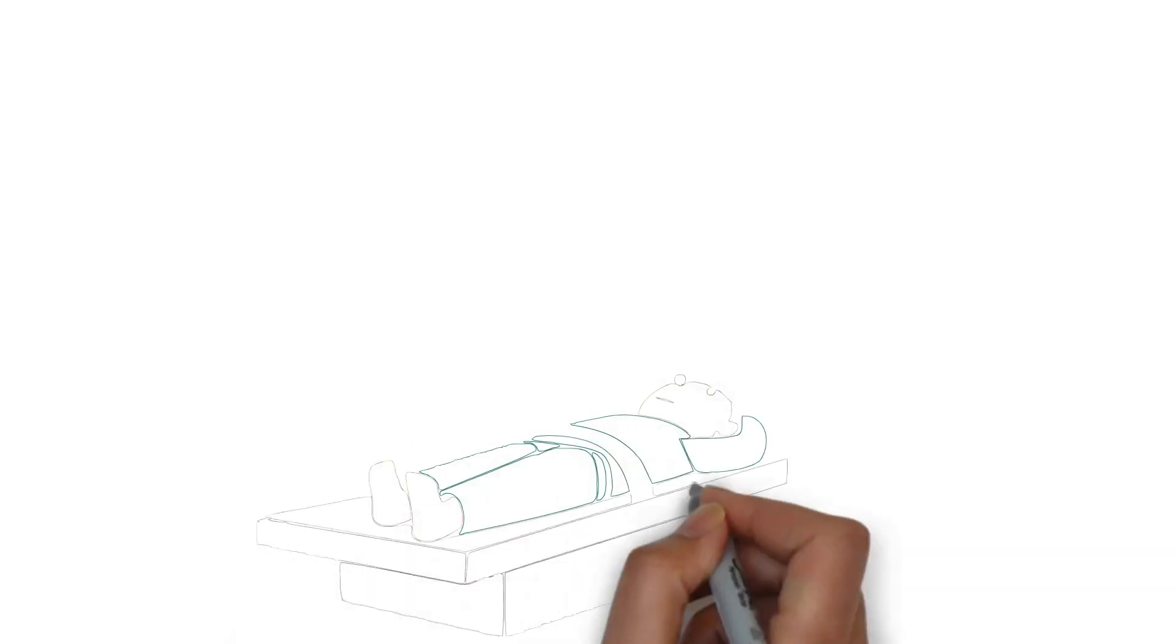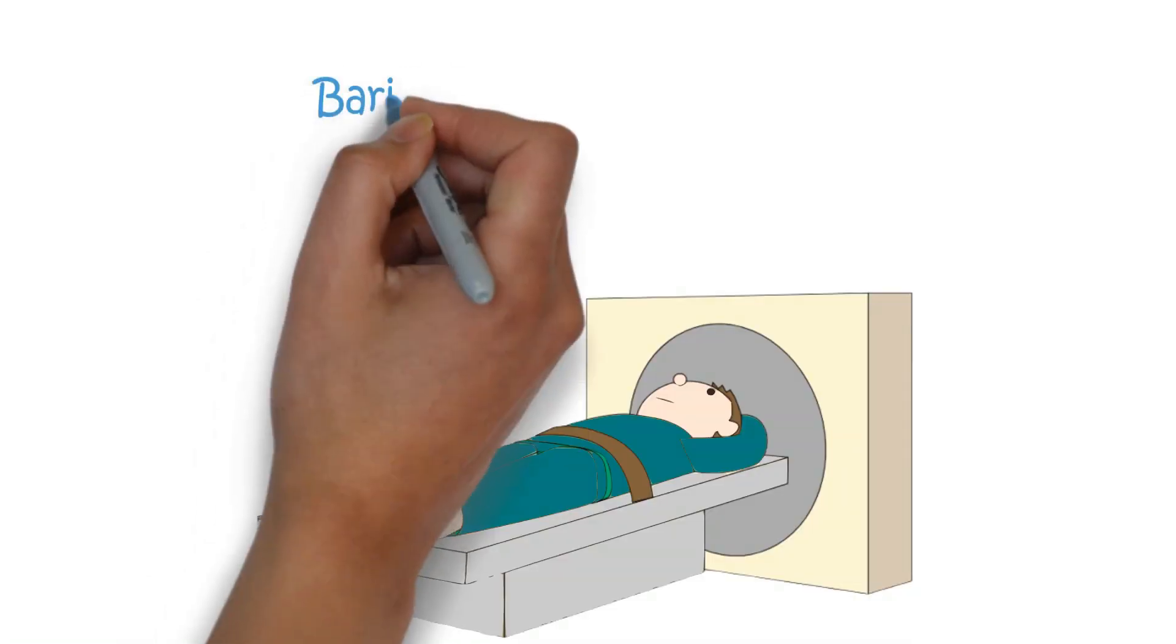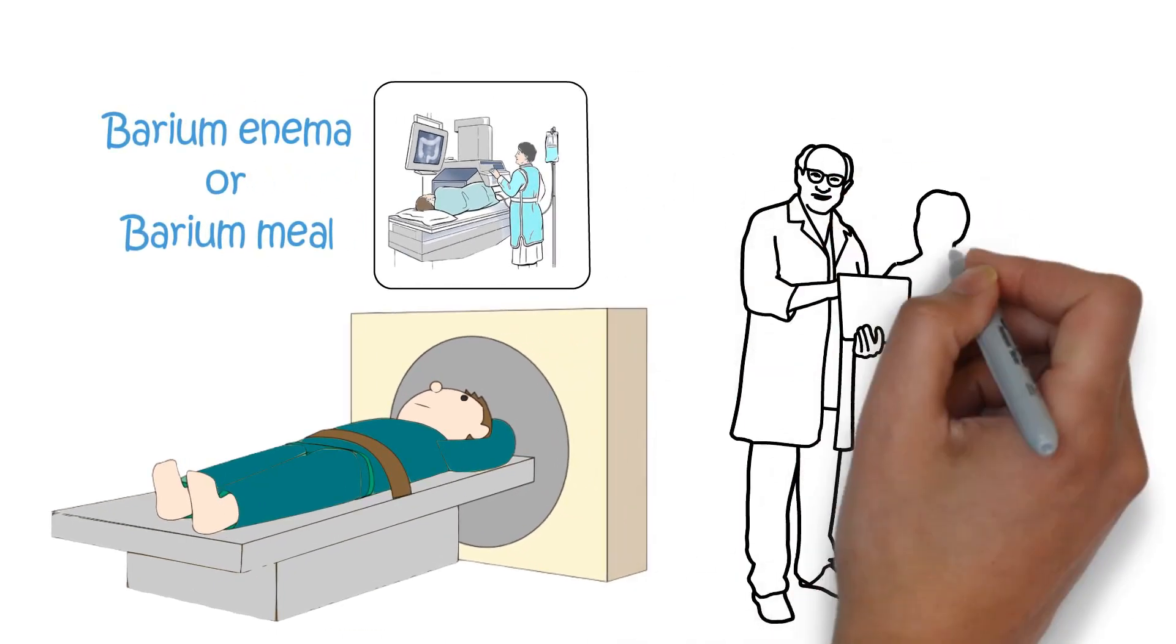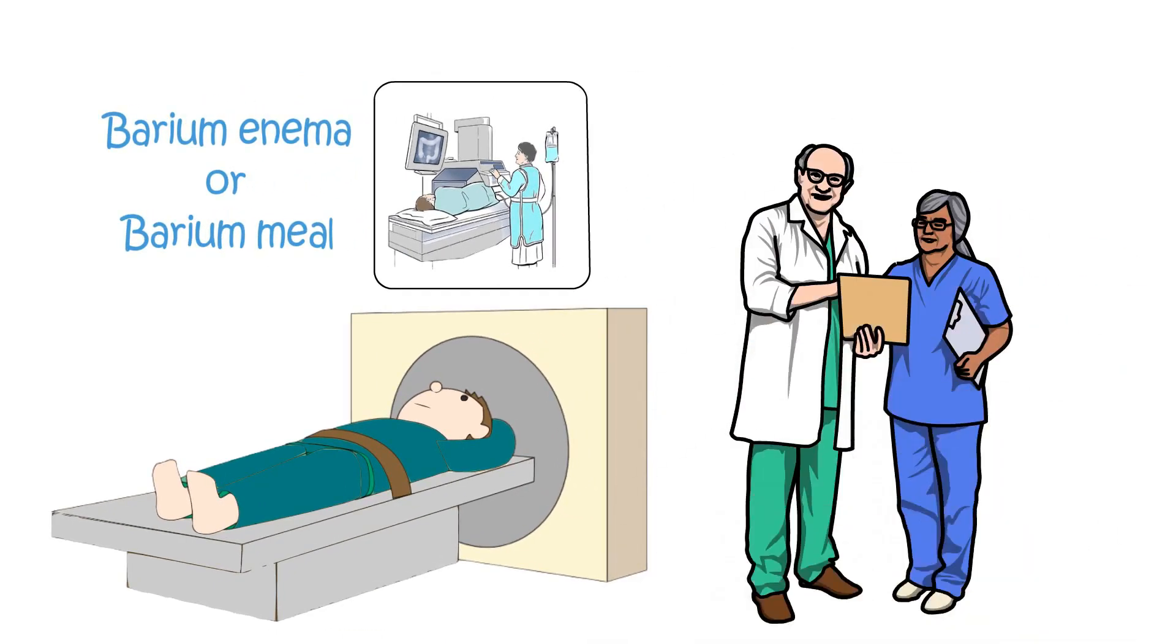CT or MRI scans may be done to help with the diagnosis. A barium enema or barium meal may also be advised to look at the small intestine and see if that is affected. Your healthcare provider will be able to discuss each investigation in detail with you before proceeding.